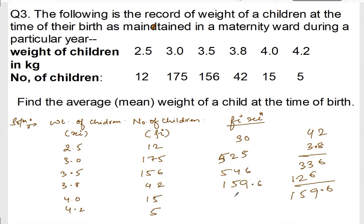15 into 4. 15, 4 is 60. So, 60. Write down. 4.2 into 5. 5, 2, 10. 5, 4, 20. 21. 210. Right? And there is 1 decimal point. So, it will be 21. So, write down this one as only 21. You can write down just as only 21.